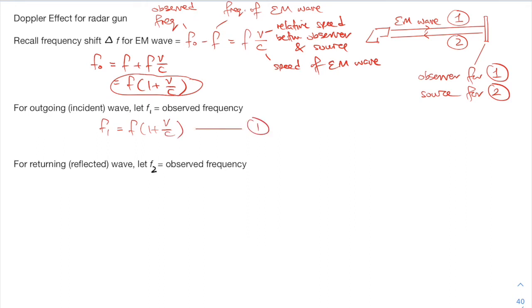Consider the returning reflected wave 2. I let F2 be the observed frequency for wave 2. And F2 would also be the same expression. But now the source frequency is no longer F. It is actually the observed frequency for wave 1, which is F1. So I put F1 and I insert the remaining equation. And I substitute equation 1. Here I get this expression.